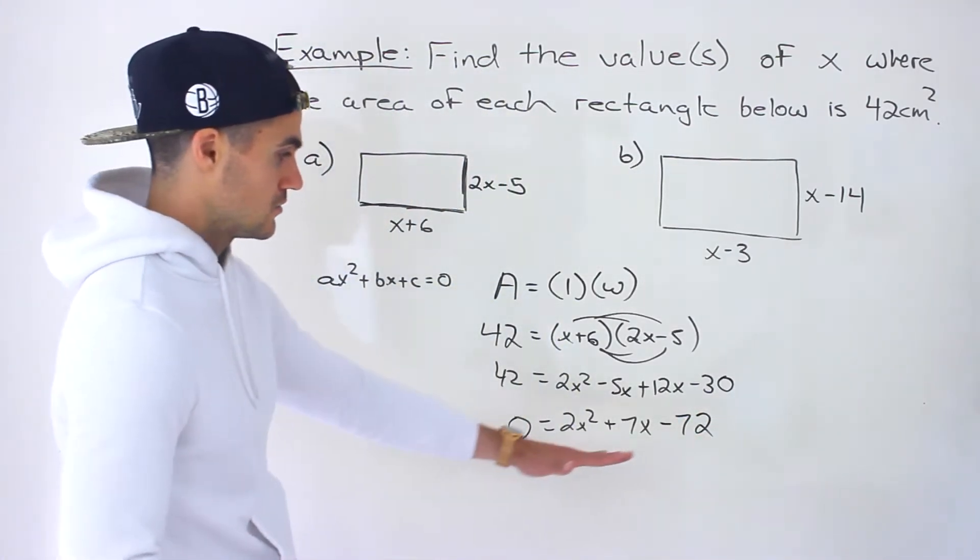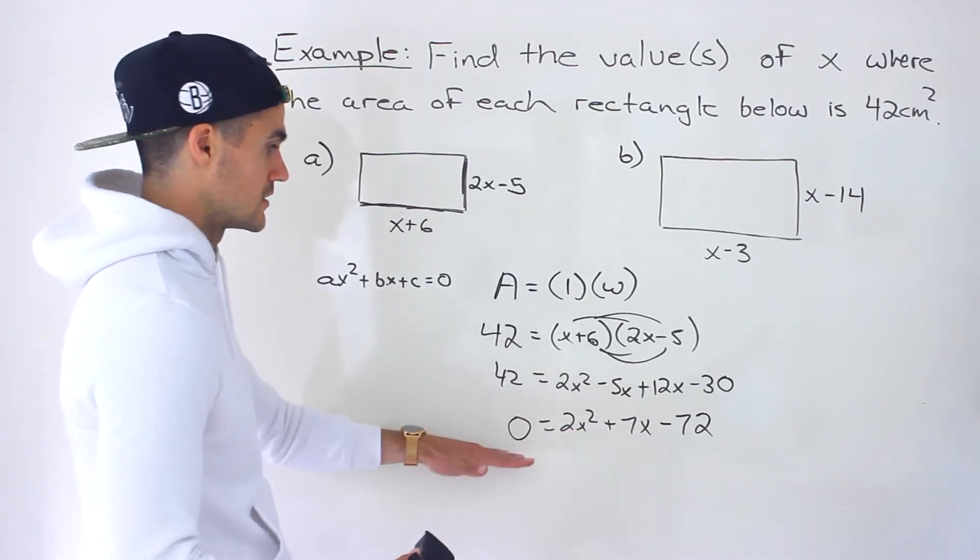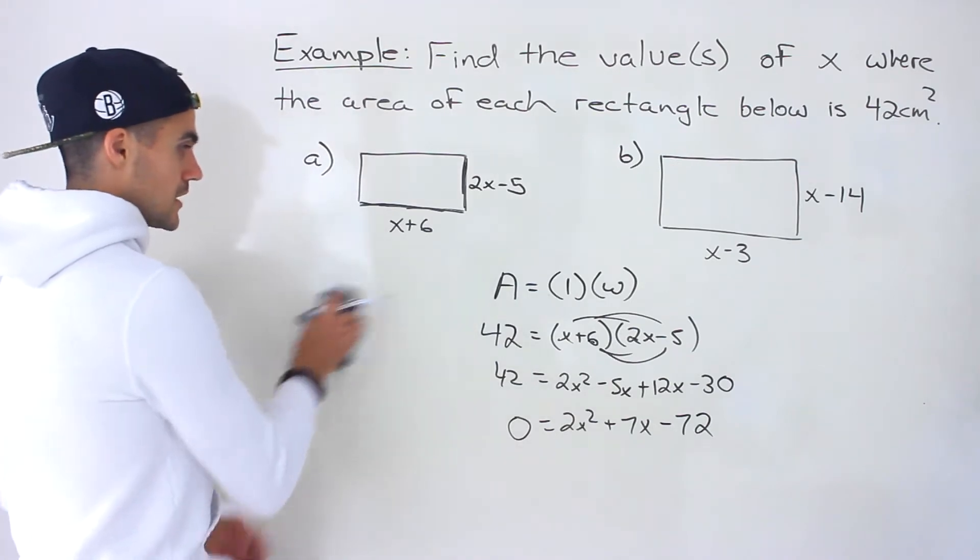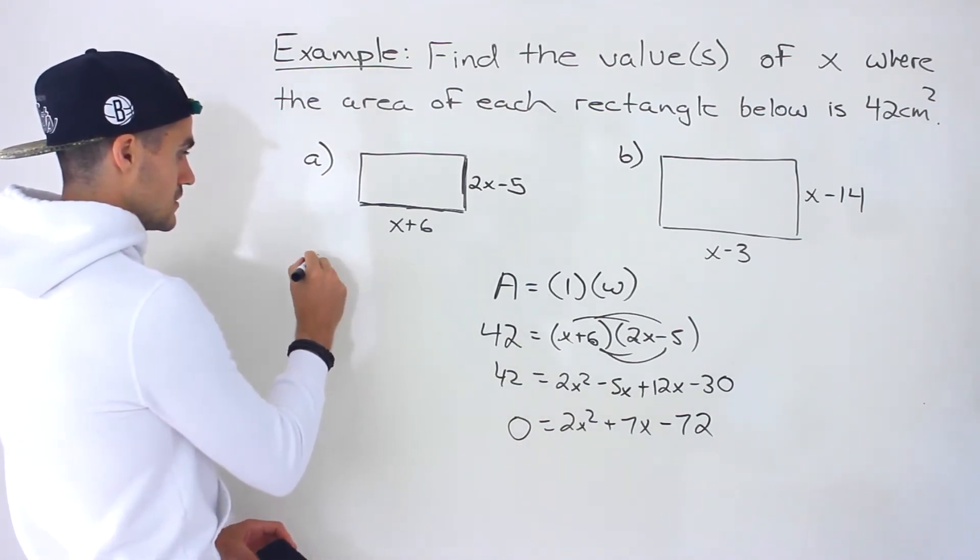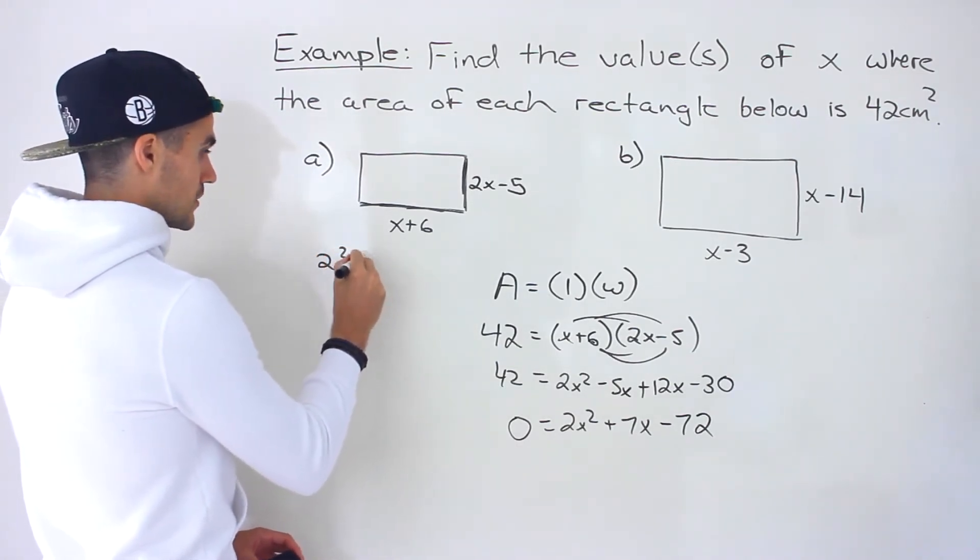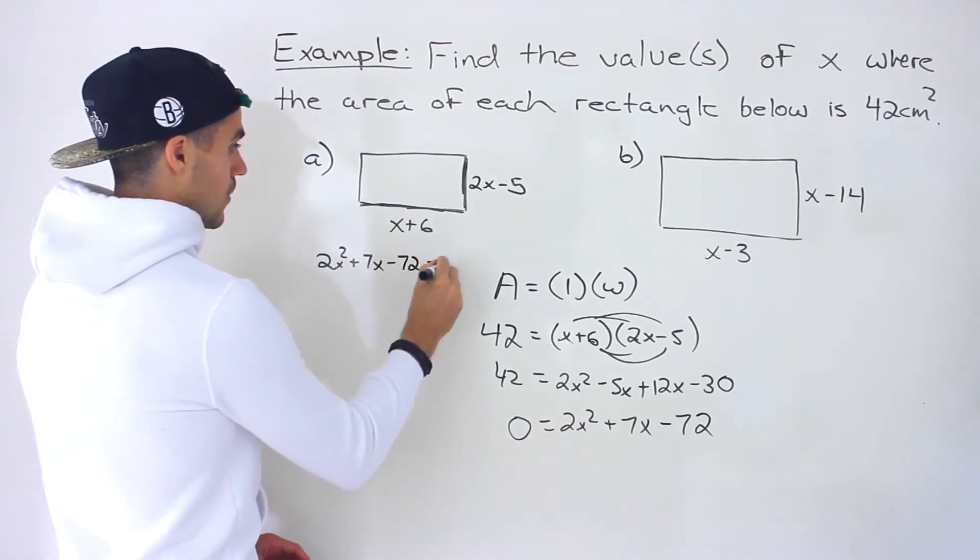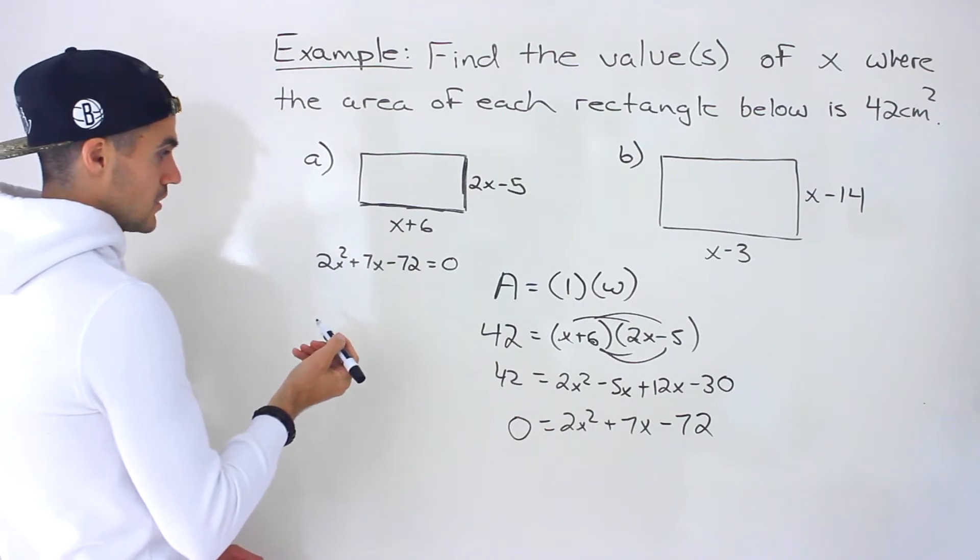And so notice now we have a quadratic equaling zero. Same thing here. Quadratic equaling zero. So let me actually write this over here. 2x squared plus 7x minus 72. When is that going to equal zero?